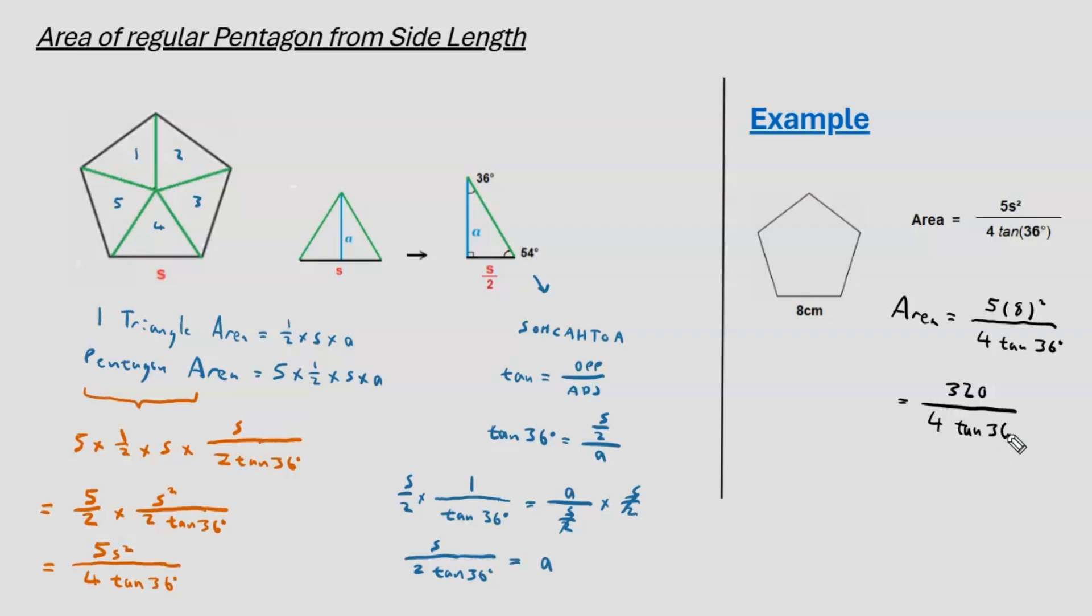So, we would need to use a standard calculator to work out tan 36 degrees, but when we work everything out, we get this result, which we can round to two decimal places, which gives us a good value for the area of this regular pentagon.